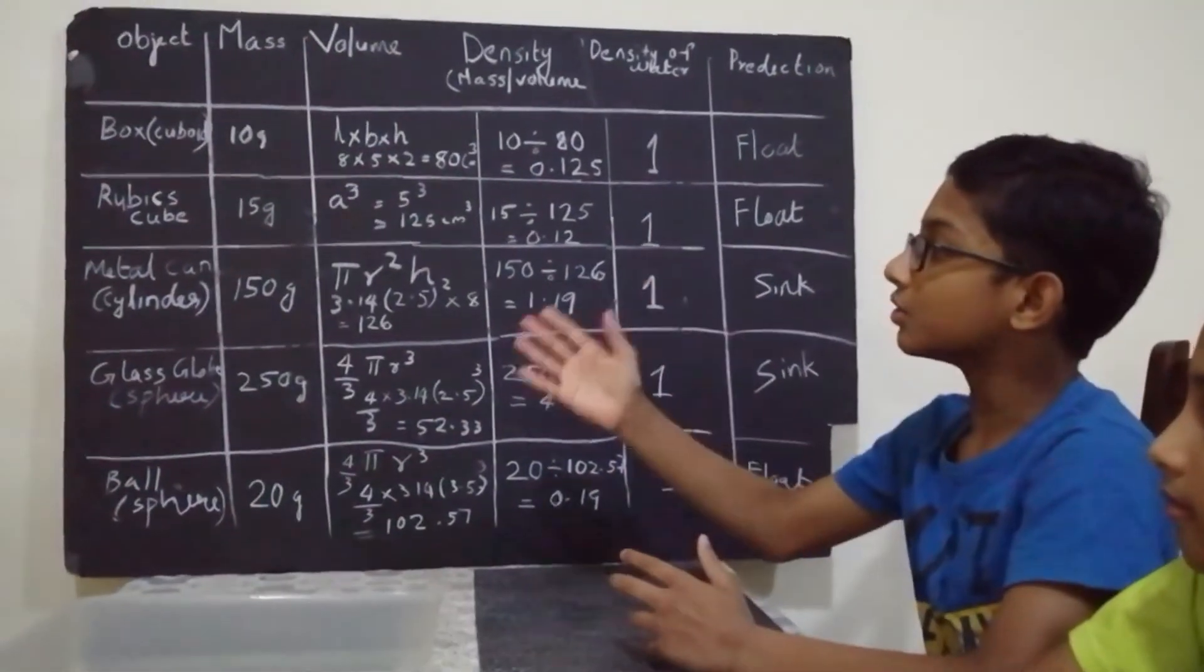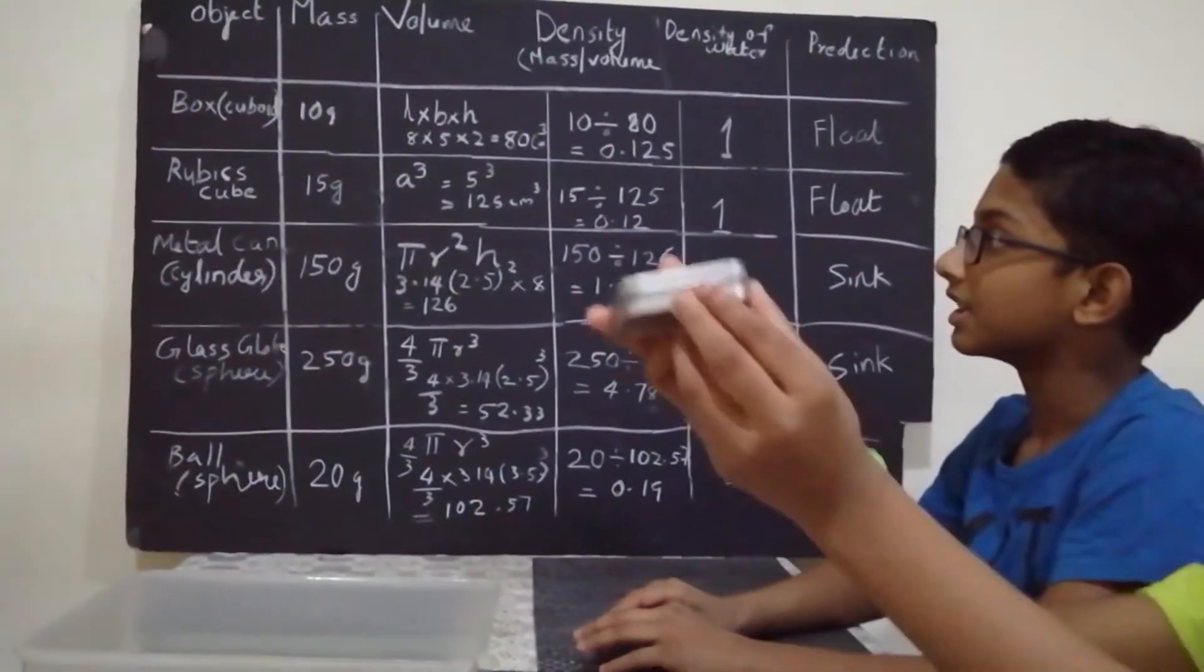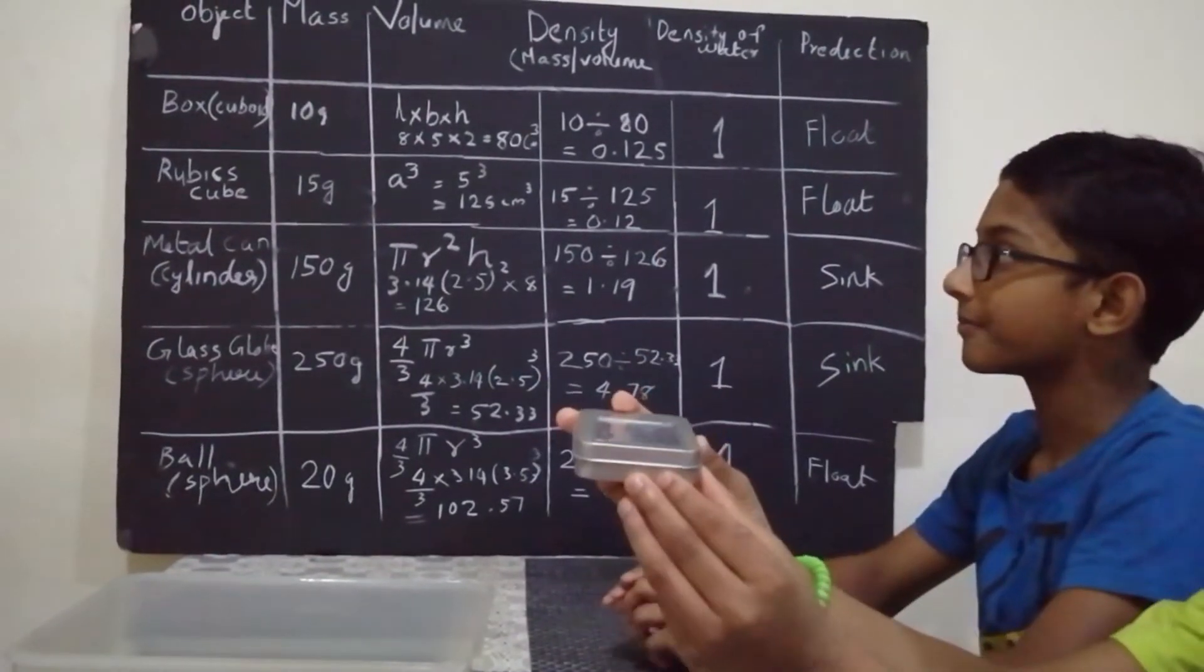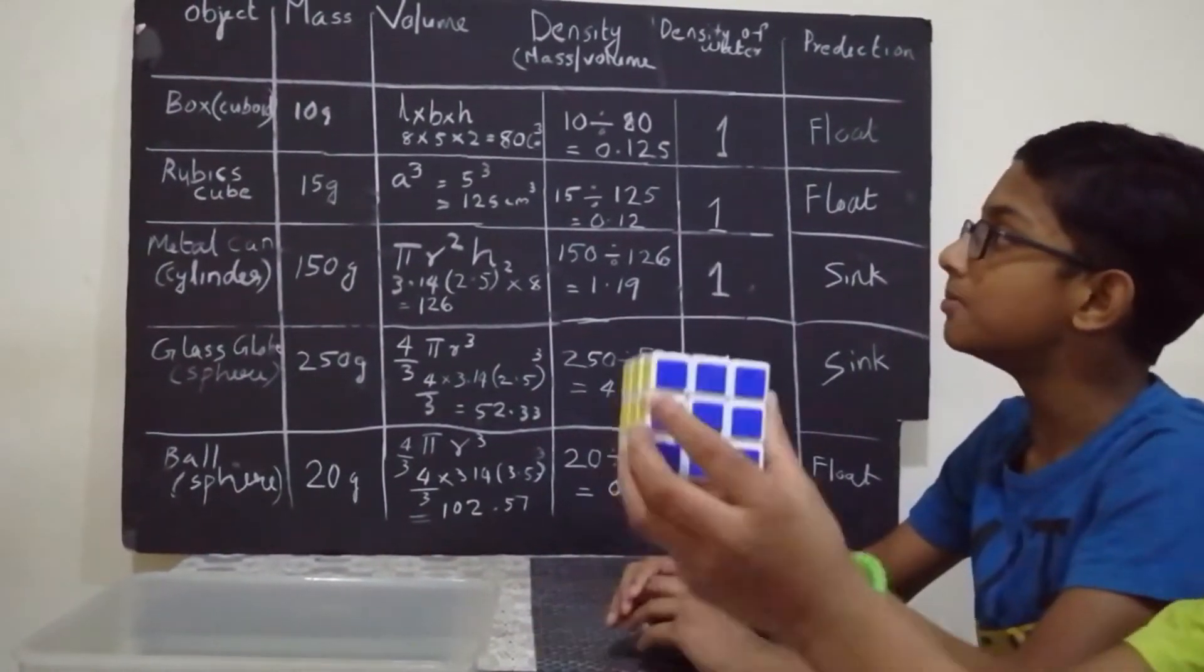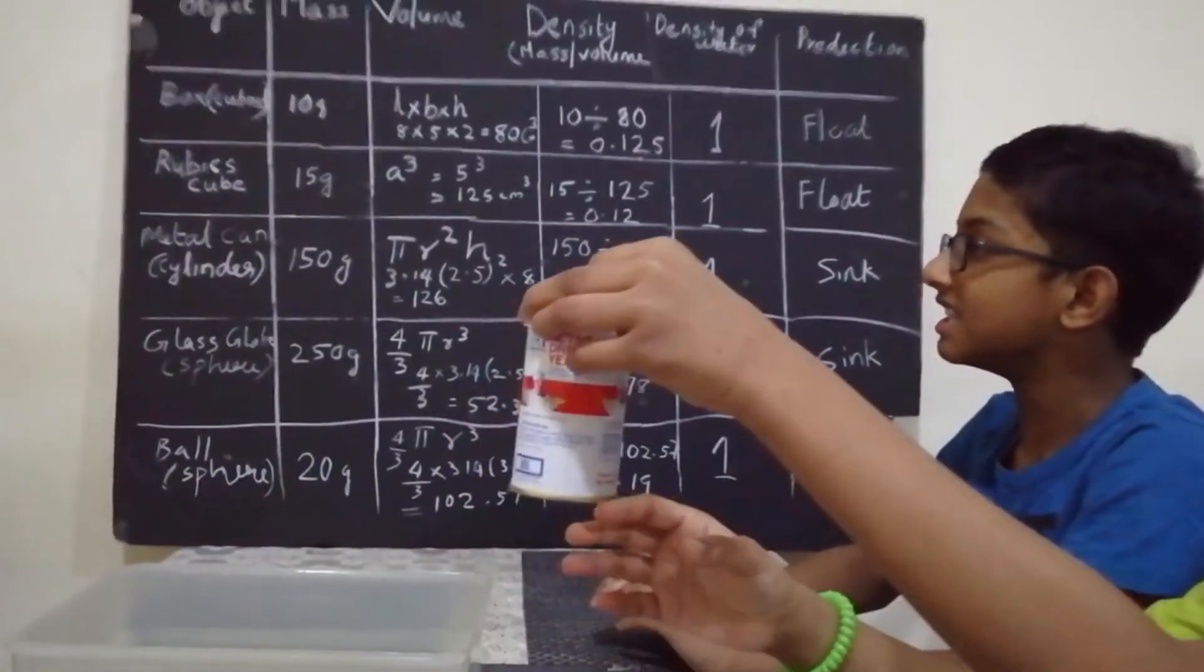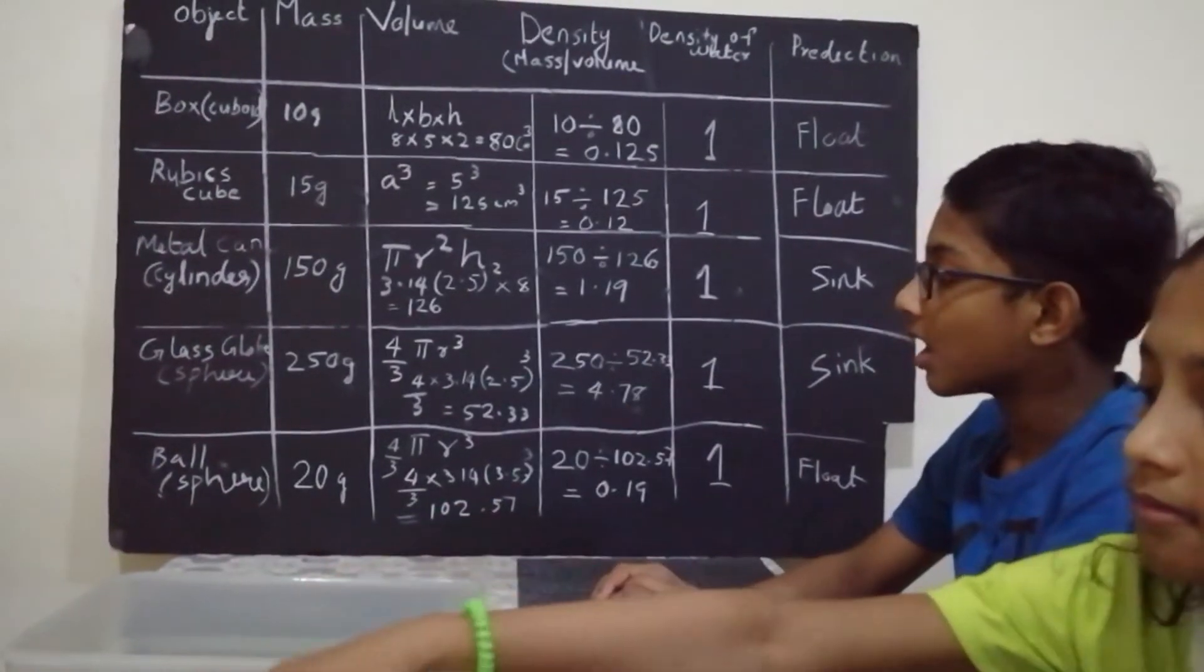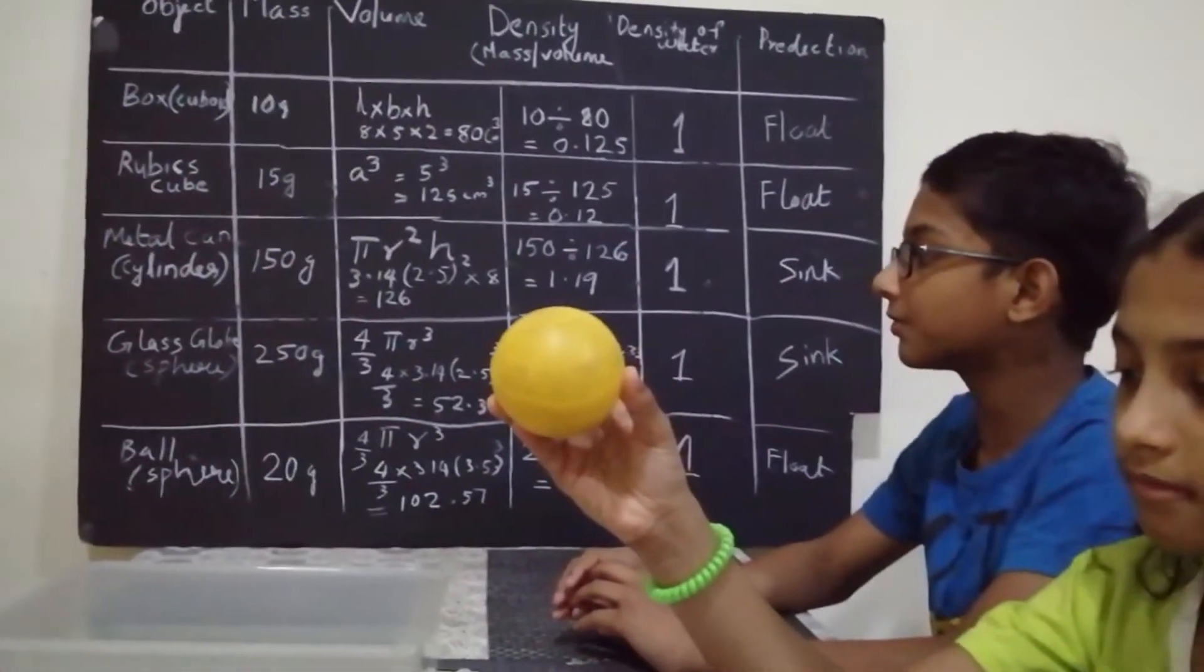I am going to use 5 objects: a box, it is in a cuboid shape; a Rubik's cube; a metal can which is a cylinder; a glass globe, sphere; a ball, also sphere.